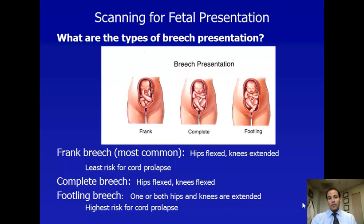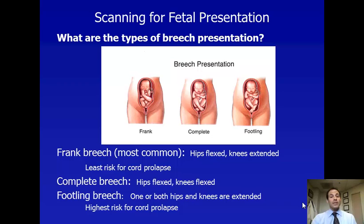Frank Breech has the least risk for cord prolapse. Complete Breech, shown in the middle section of the screen, is where the fetus is in breech presentation but the hips and knees are both flexed — almost sitting Indian style, like you would remember from kindergarten. Footling Breech on the far right is where one or both hips and knees are extended so that a foot may present down through the cervix or into the vagina. A fetus can present in a single or double footling breech. This is the most concerning type as it has the highest risk for cord prolapse.